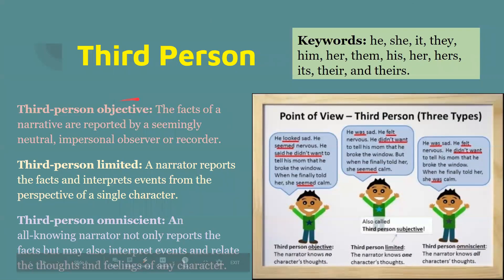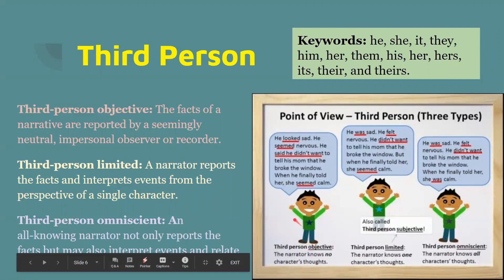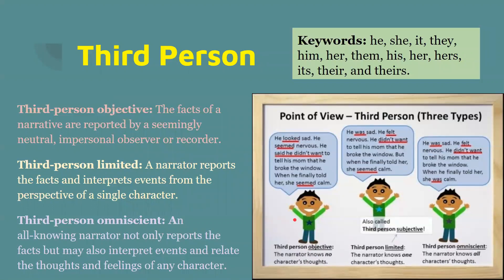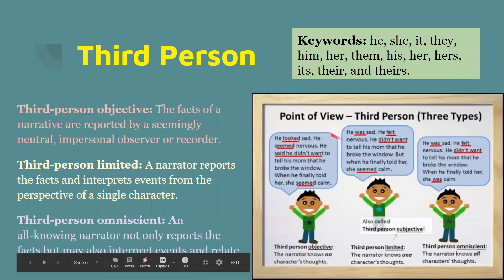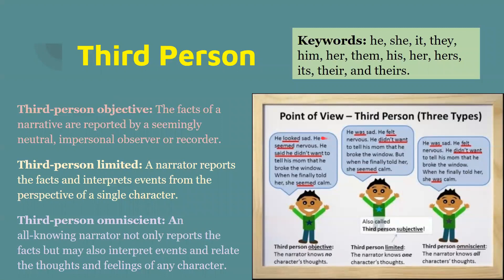First, we have objective. The facts of a narrator are reported by a seemingly neutral, impersonal observer or recorder. The narrator knows no character's thoughts. So: 'He looks sad' — we don't know why. 'He seemed nervous' — again, we don't know why. 'He said he didn't want to tell his mom that he broke the window.' Why did he break the window? Why doesn't he want to tell his mom? We don't know, and neither does the narrator.